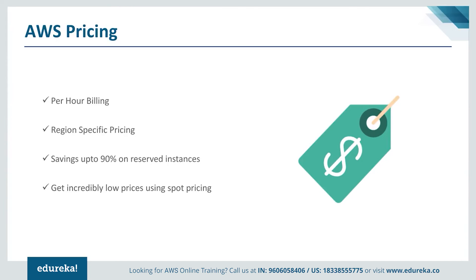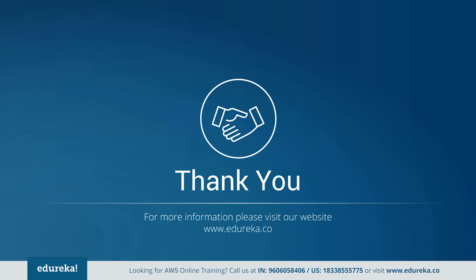There is also an option for spot pricing, where you get incredibly low prices by bidding on servers for a particular price. You bid on a server — say two dollars — and if a server is available, you get it. You use that server until the server price goes up, and once it goes up, the server is taken back automatically. This is helpful for workloads where the work is not that urgent but you want to get it done at the minimum cost possible. And with that, we come to an end of the AWS overview. Thank you for attending today's session — I hope you learned something new. Please like and subscribe to our channel and share it with your friends. Happy learning!